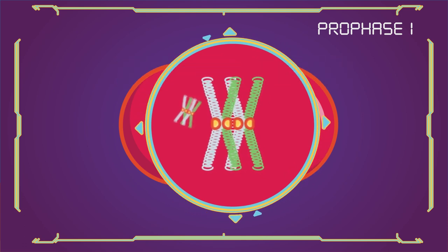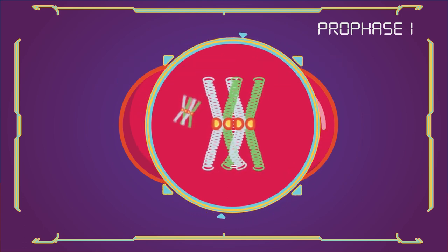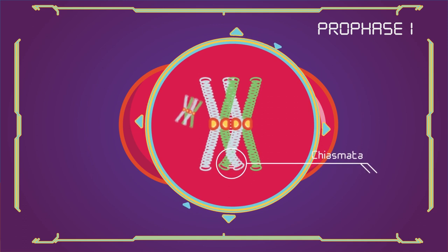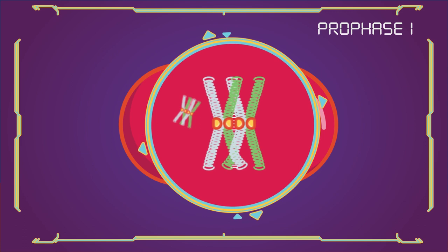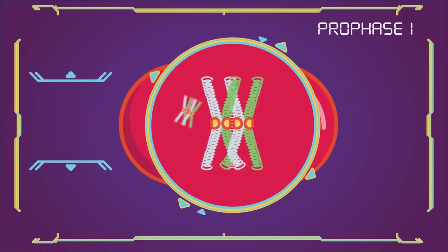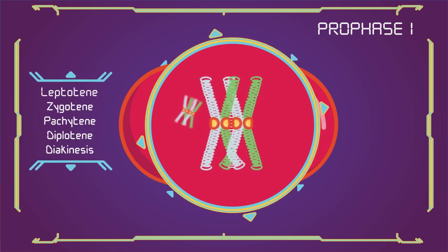At this stage, non-sister chromatids may cross over at points called chiasmata (plural, singular chiasma). Prophase 1 has historically been divided into a series of substages, which are named according to the appearance of chromosomes.